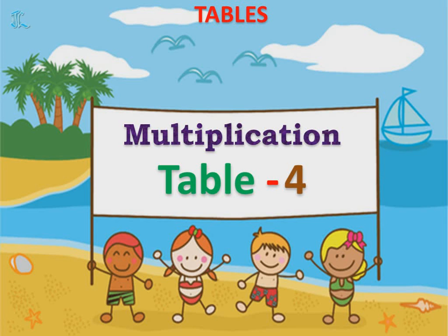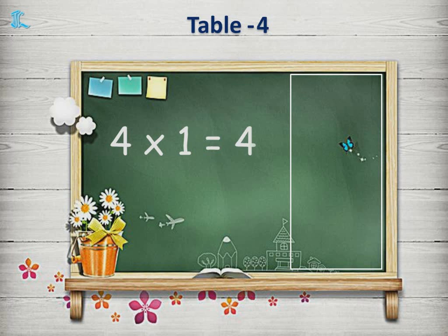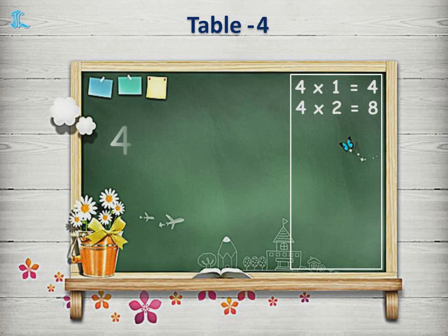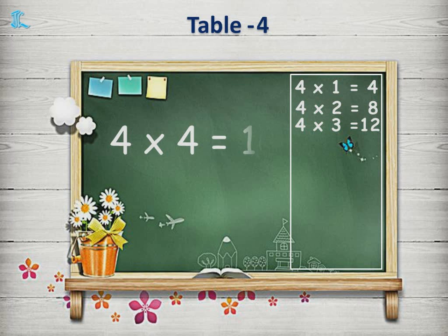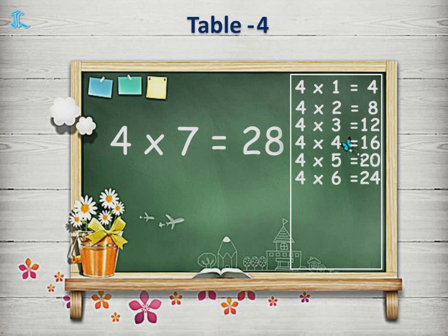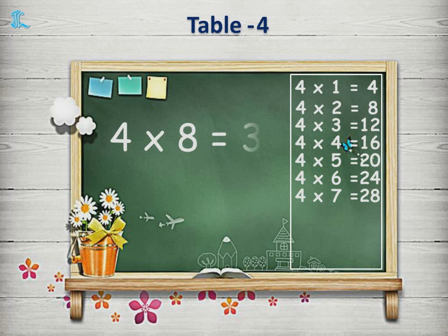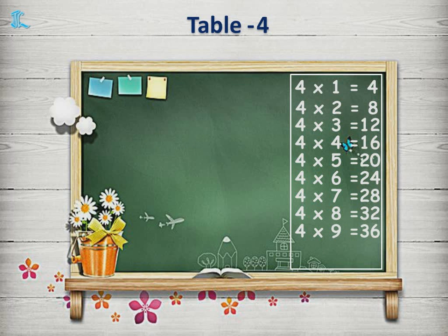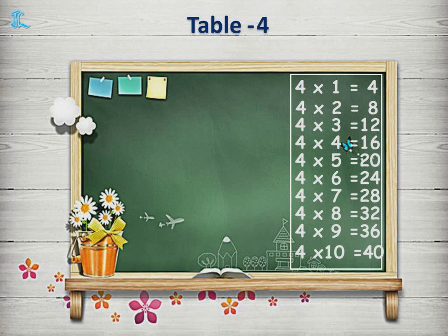Multiplication Table 4. 4 1s are 4. 4 2s are 8. 4 3s are 12. 4 4s are 16. 4 5s are 20. 4 6s are 24. 4 7s are 28. 4 8s are 32. 4 9s are 36. 4 10s are 40. So let's repeat the Table 4 once again.